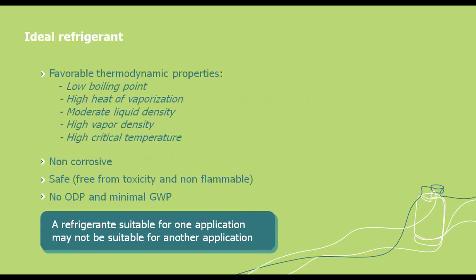There are several properties that make up what we would consider an ideal refrigerant. First, it would have a low boiling point — you want that boiling point to be a little bit lower than the temperature you're trying to achieve in your cabinet. A high heat of vaporization. You want it to be safe: free from toxicity and not flammable. You want no ozone depletion potential, mainly because that's outlawed and it's bad for the atmosphere. And a minimal GWP, the global warming potential of the gas, which impacts our atmosphere. Also, you need to pay attention to the application the refrigerant is being used in, as one suitable for one application may not be suitable for another.